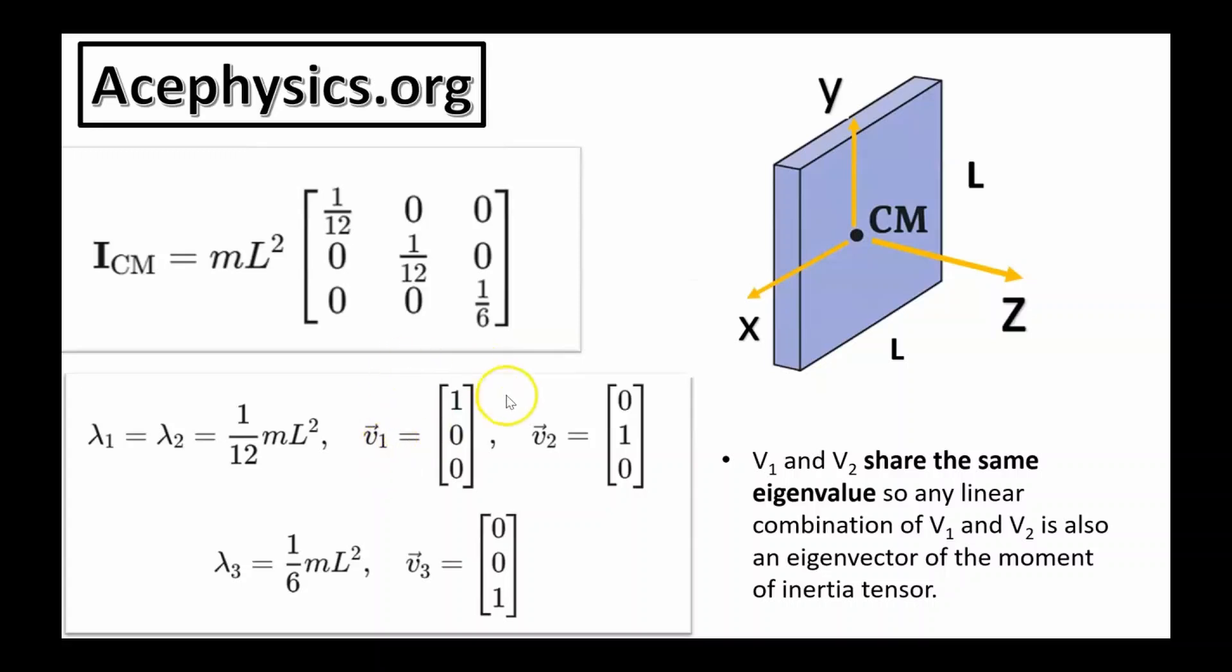Notice the eigenvector Vx and Vy have the same eigenvalue. There's a degeneracy. 1 over 12 appears twice. That's not surprising. If you rotated the plate by 90 degrees around the z-axis the geometry would remain unchanged. Because these two eigenvalues are degenerate, any linear combination of their corresponding eigenvectors is also an eigenvector. So any axis in the XY plane is the principal axes for this object.